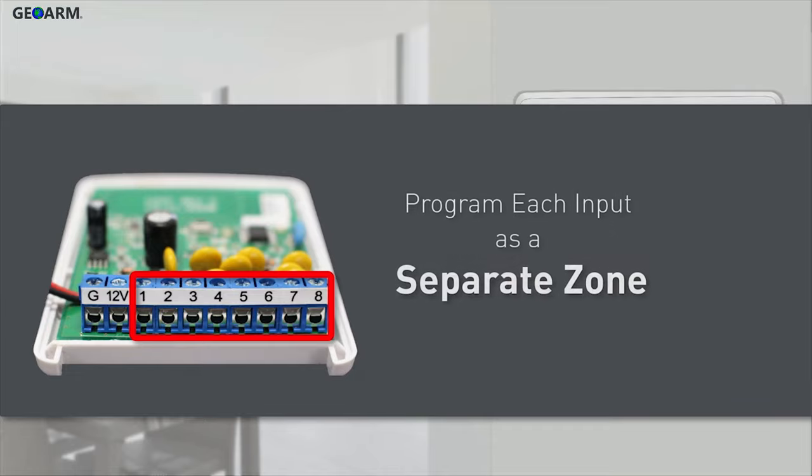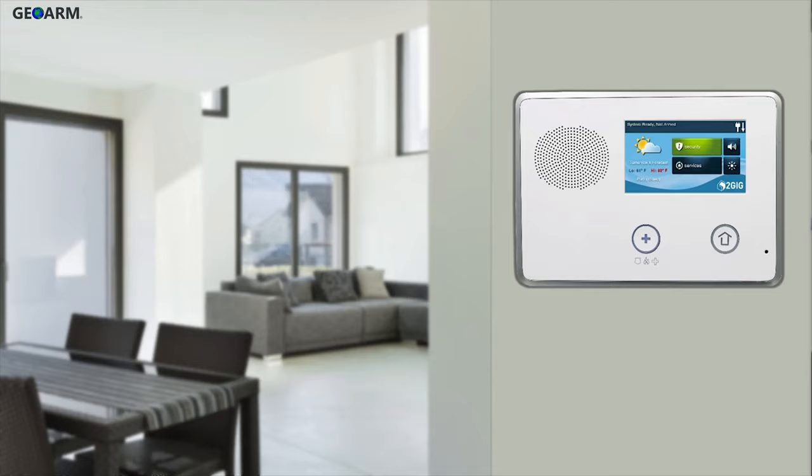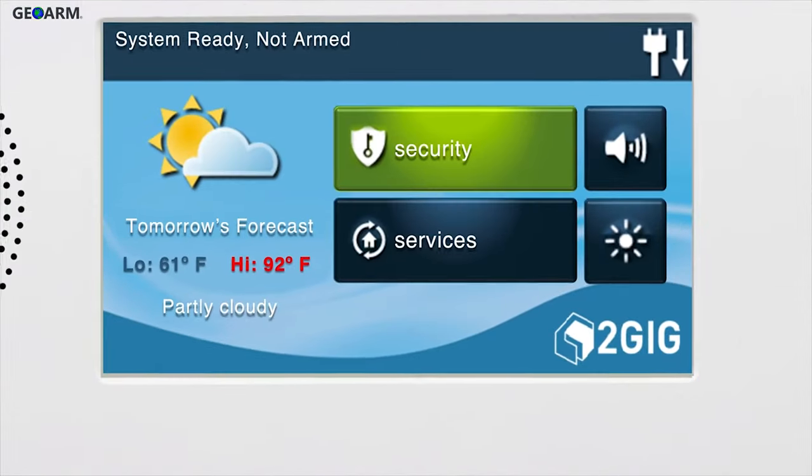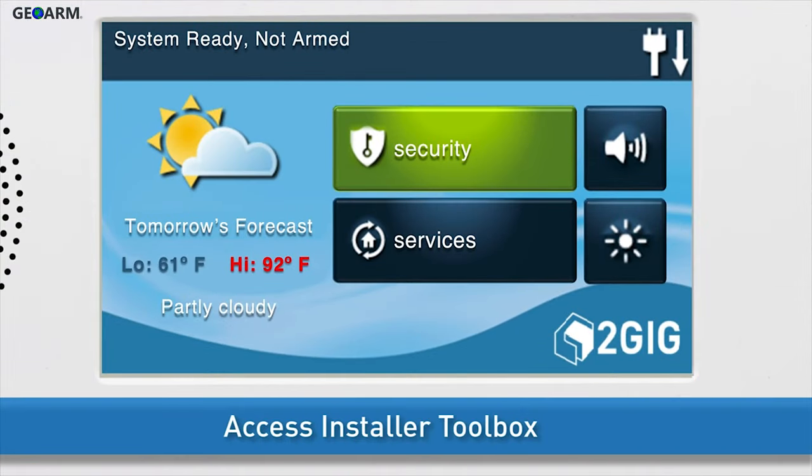Each of the eight inputs should be programmed as separate zones on the panel. To program one of the TakeOver module's inputs into a security zone, you will first need to access the Installer Toolbox.